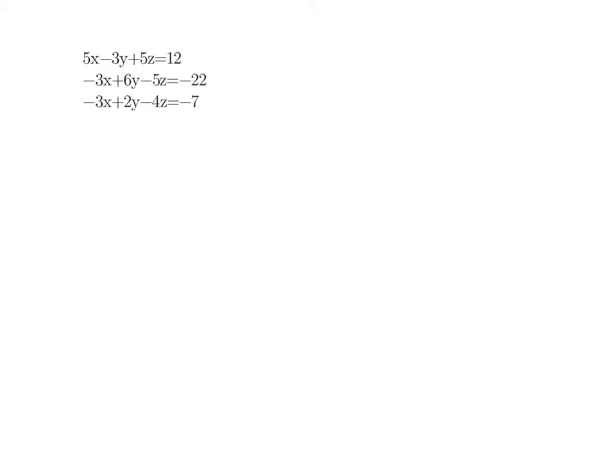To do that, we need to choose a variable to eliminate. Just like elimination with two variables, we're going to do the same thing. We want to look at our coefficients — the number in front of the variable — and we want to pick a coefficient that has the same coefficient but opposite signs.